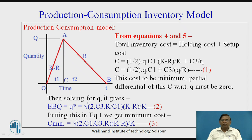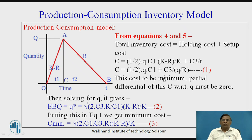In the altered form of the cost equation, T is replaced in terms of small q, the batch size. In the earlier holding cost calculations, capital Q was the holding quantity, which is again replaced in terms of small q. For setup cost, T is also replaced in terms of small q, because we are interested in knowing what small q — the quantity to manufacture — should be. Differentiating this cost equation partially with respect to small q and equating to zero for minimum cost, we ultimately get the relation for small q*, which we call economic batch quantity, given as equation number 2.